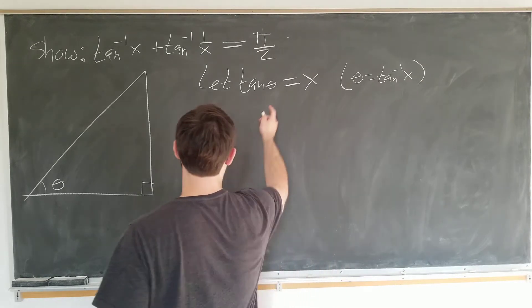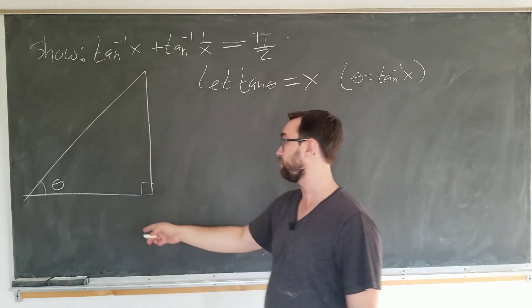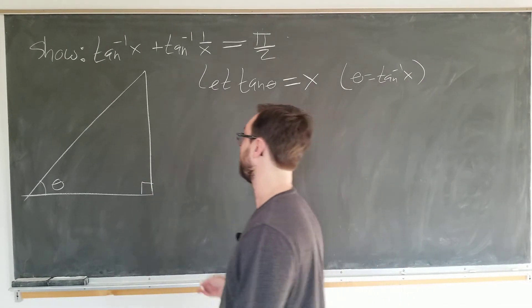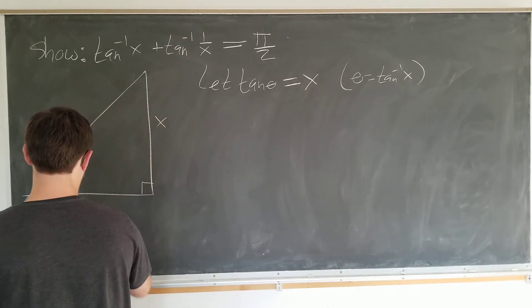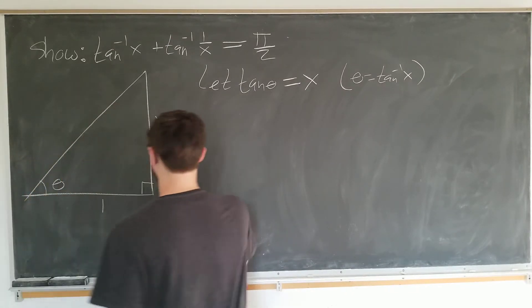And this tells us that y over x has to be equal to x. So a choice we can make to accomplish this is having this be x and this be 1.